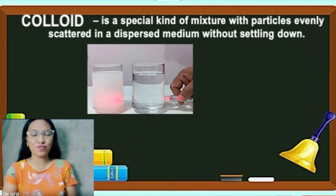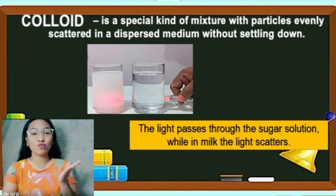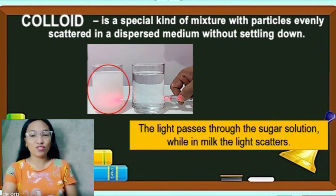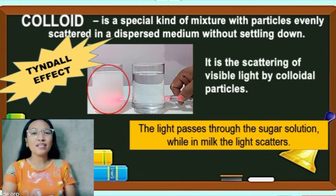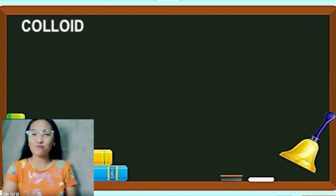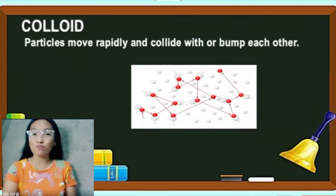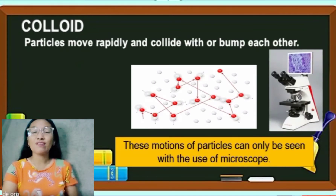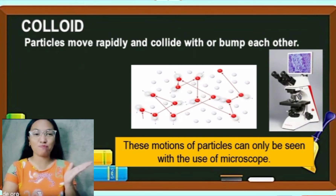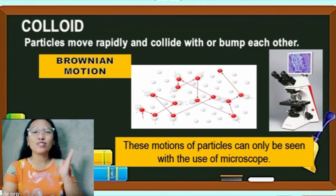Let's look at this illustration. We have two solutions. The light passes through the sugar solution, while in milk, the light scatters. This illustration shows the Tyndall effect — the scattering of visible light by colloid particles. Another property of colloid is that particles move rapidly and collide with or bump each other. These motions of particles can only be seen with the use of a microscope, and this is what we call Brownian motion.